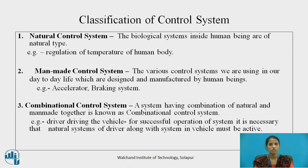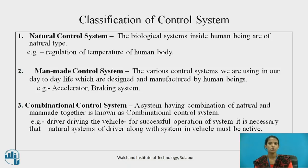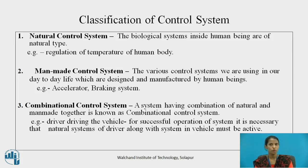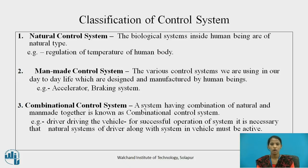Next is the combinational control system. As the name indicates, a combinational control system is a combination of natural and man-made systems together. For example, a driver driving a vehicle. For the successful operation of the system, it is necessary that the natural control system of the driver along with the systems in the vehicle must be active.